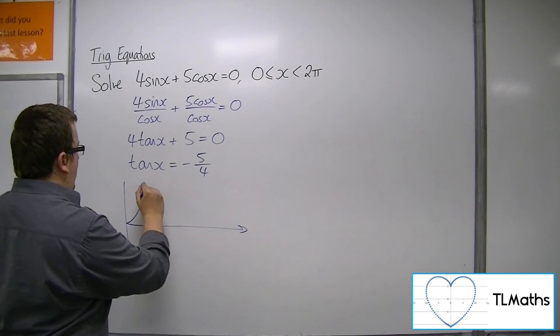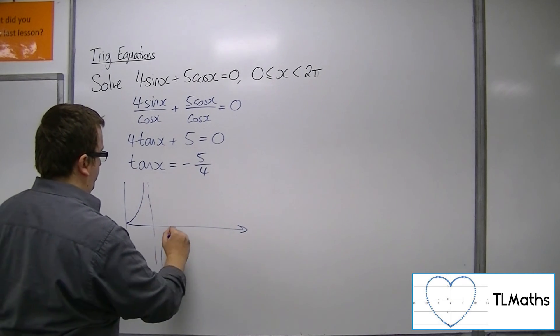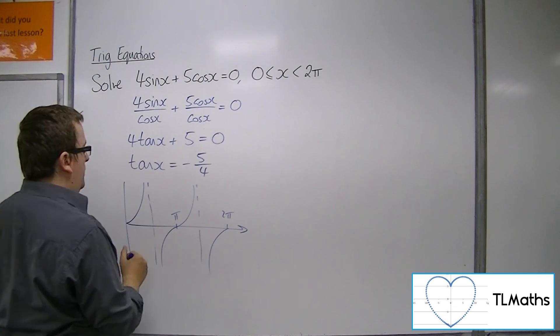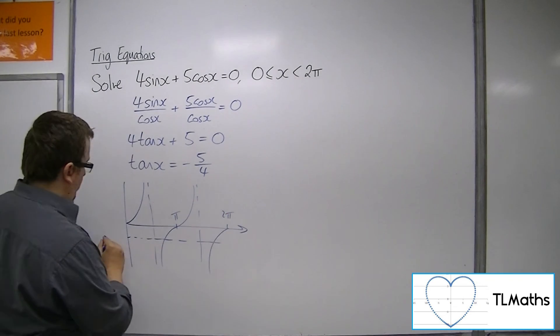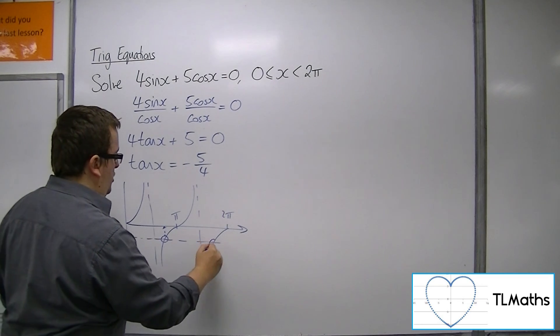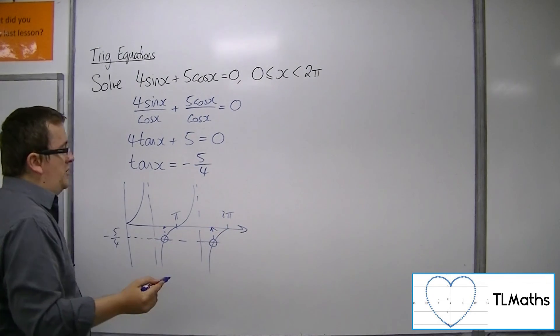So if we sketch tan between 0 and 2π, minus 5/4 is down here. We can see that it's going to cross the curve in two positions, so there are two solutions.